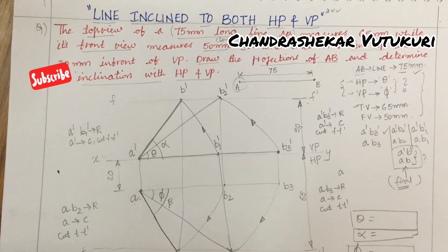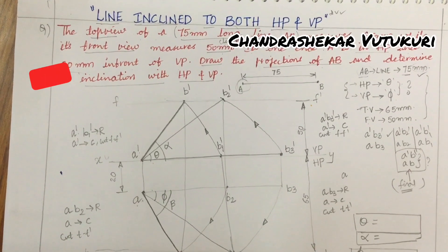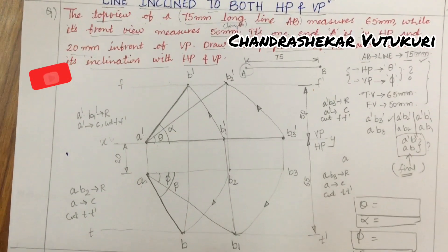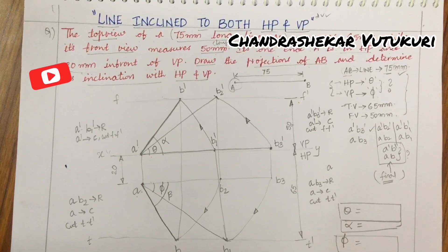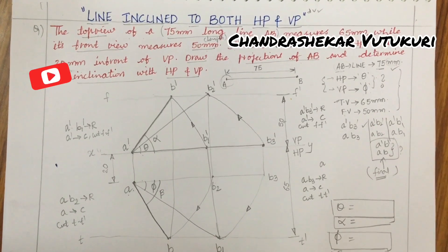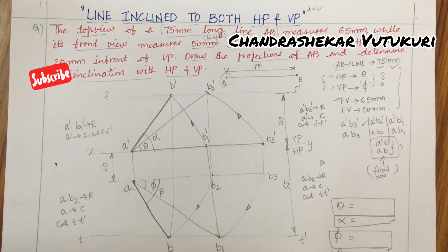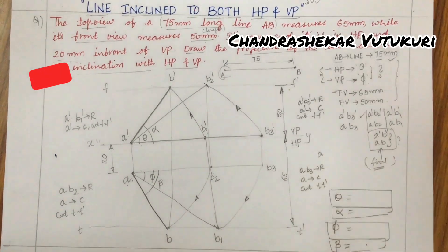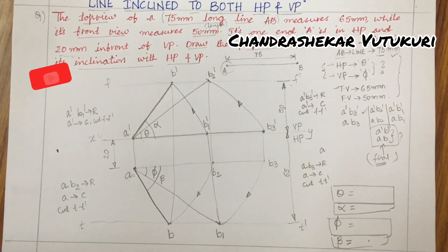This is how you are supposed to work out the problem when inclinations are missing and you need to determine them in order to score full marks. For more videos, please subscribe to my channel, and if you are looking for any other concept, please put it in the comment section. Good luck and God bless you all. Thank you.